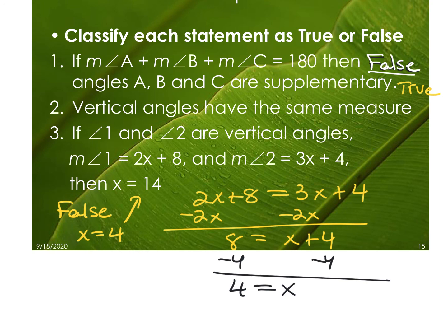That is it for section 2.6, proving angle pair relationships. Your homework is 2-6, which needs to be turned in by Monday. You also have two optional review assignments — highly recommended, with answers provided. The first review uses the file on Canvas; for the additional review, answers are linked separately. Neither needs to be turned in to Canvas. On Monday we'll go over homework questions, do any review questions, play a Kahoot, and get ready for Tuesday's test.